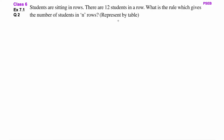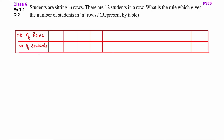Here we have to represent by table. In the form of a table, we will write a generic rule. Number of rows aur number of students ke liye, hum table mein 1, 2, 3 likhenge.